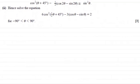Hi. Now in the first part of the question, we were given this identity to prove: cos²(θ + 45°) - ½(cos 2θ - sin 2θ) was identical to sin²θ.